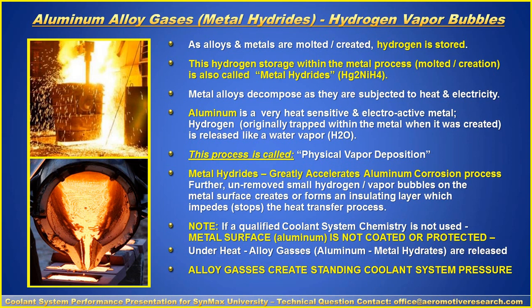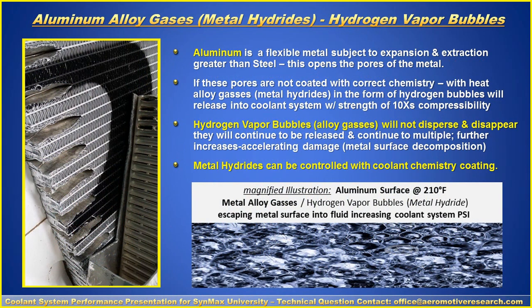If a qualified coolant system chemistry is not used, the metal surface aluminum is not coated or protected. Then under heat, aluminum metal hydrites are released. These alloy gases create standing coolant system pressure. Aluminum is a flexible metal with expansion and contraction greater than steel. This opens the pores of the metal. If these pores are not coated with the correct chemistry, the heat or alloy gases in the form of hydrogen bubbles will release into the coolant system with 10 times the compressibility of the fluid itself. Hydrogen vapor bubbles or alloy gases will not disperse and disappear. They will continue to be released and continue to multiply, further increasing accelerated damage or what we call metal surface decomposition. The metal hydrates can be controlled with coolant chemistry. Even though you do have this problem, it can be controlled.